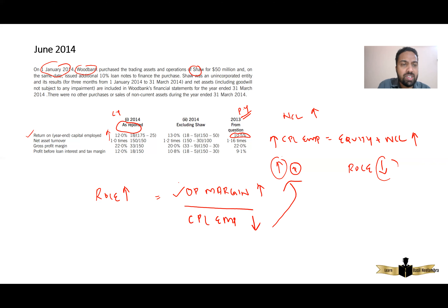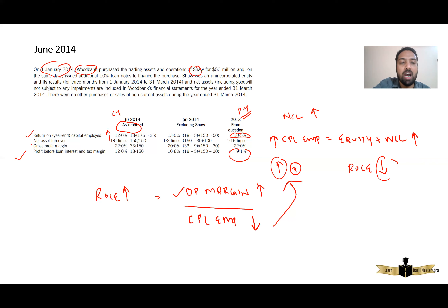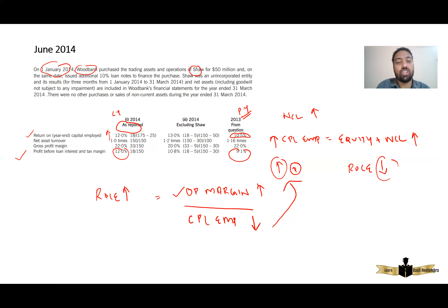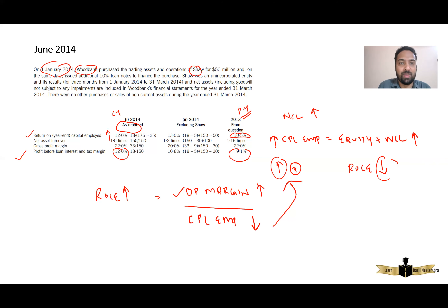You can also see that in 2013, the PBIT margin or operating margin was 9.1%. It has increased to 12%. So definitely ROCE is increasing due to higher operating margin. But — and this is what they expect from you.